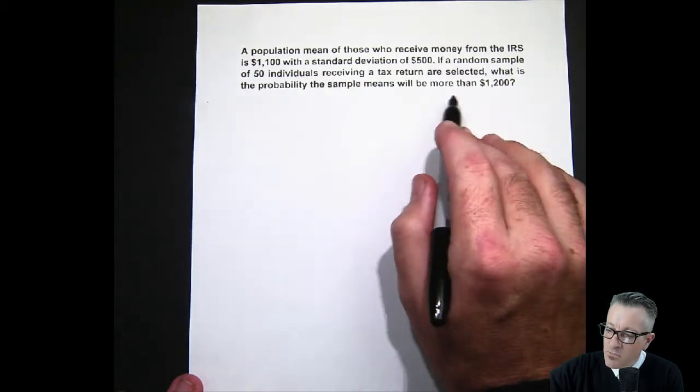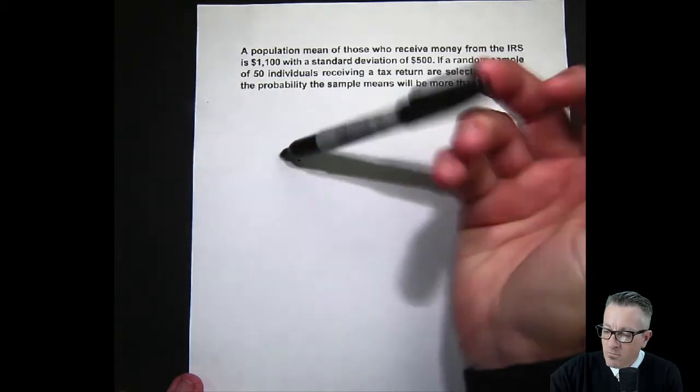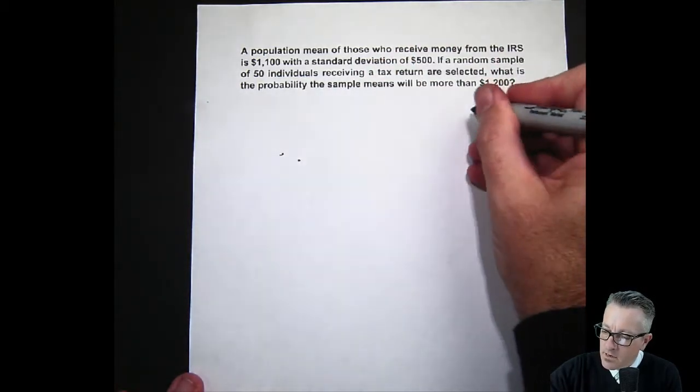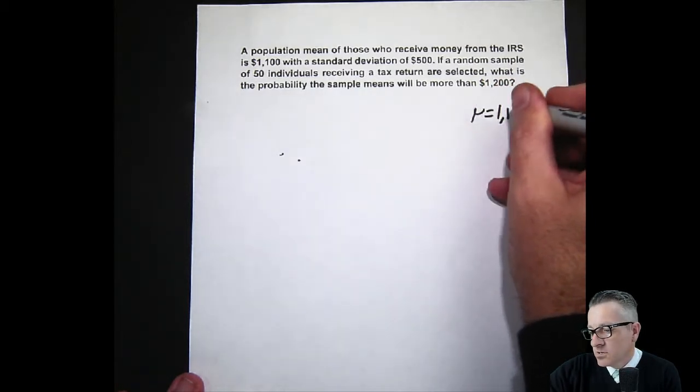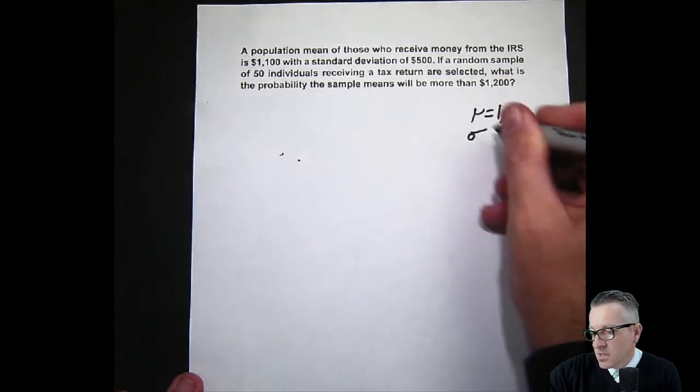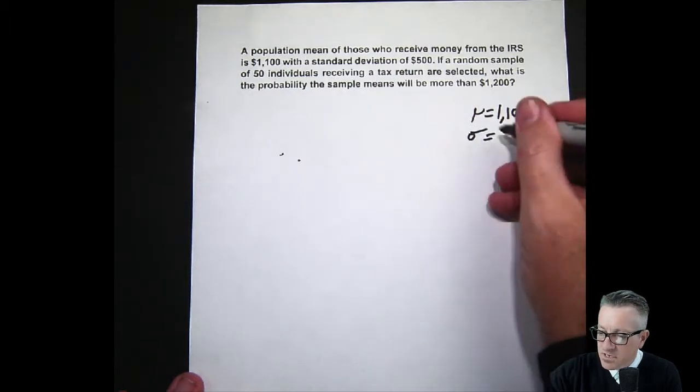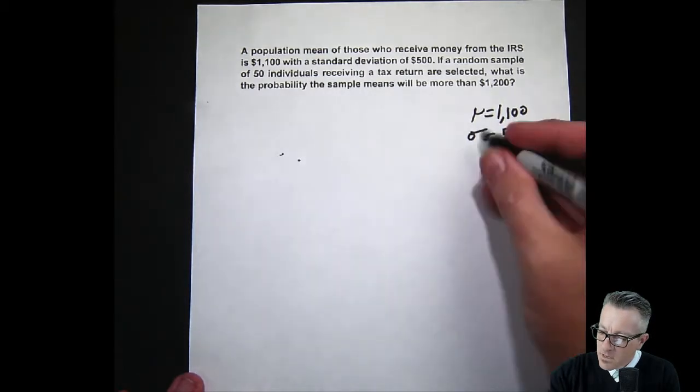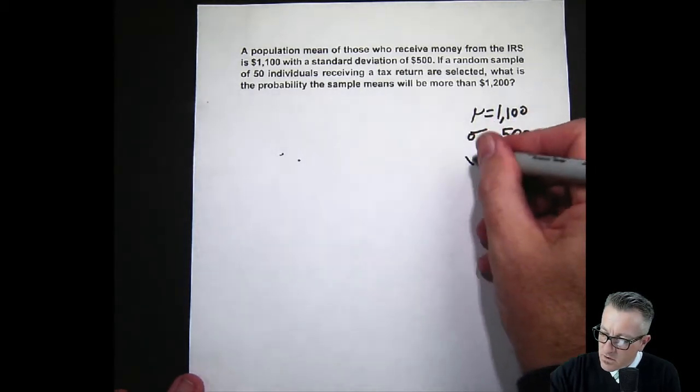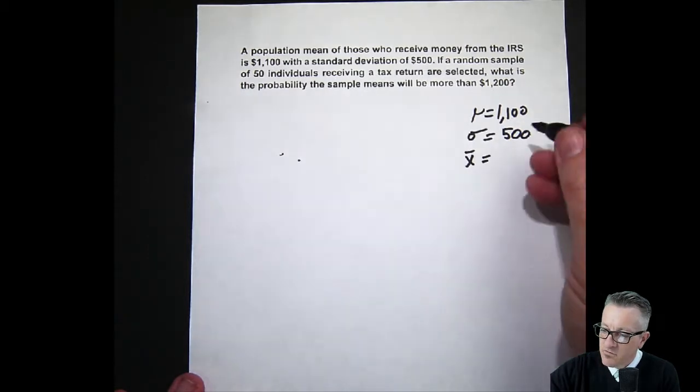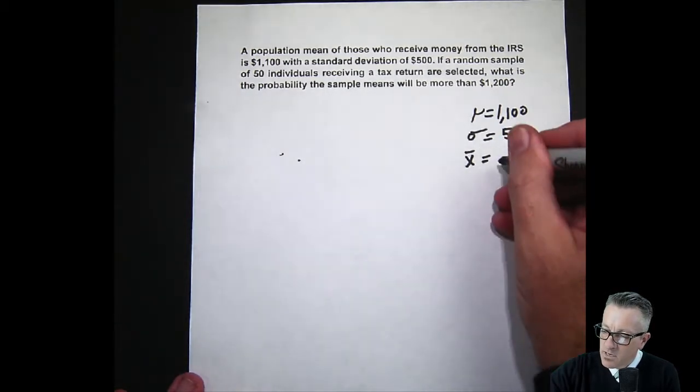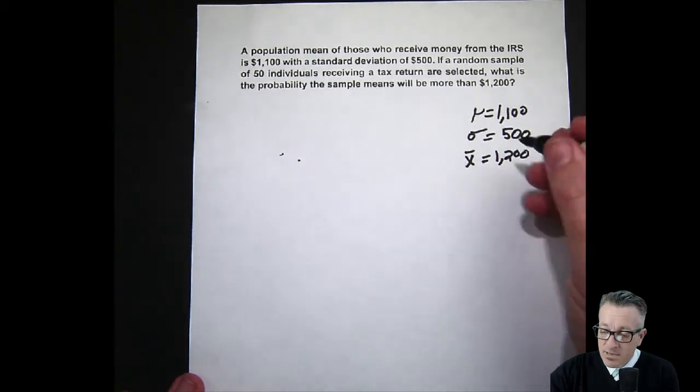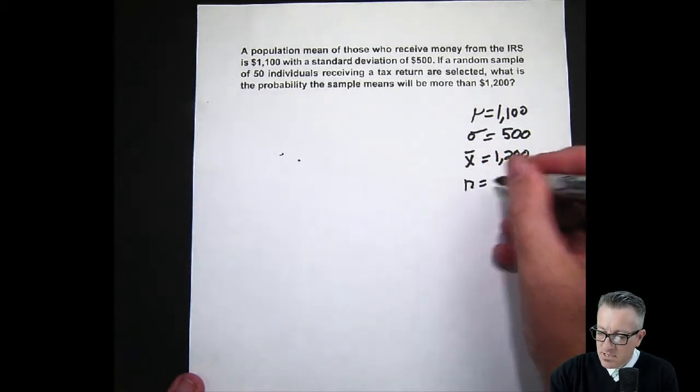Let's write out what we know right off the bat. We have a μ of $1,100, a population standard deviation σ of $500, and we're looking for the probability of our sample mean being $1,200. Our sample size n is 50.